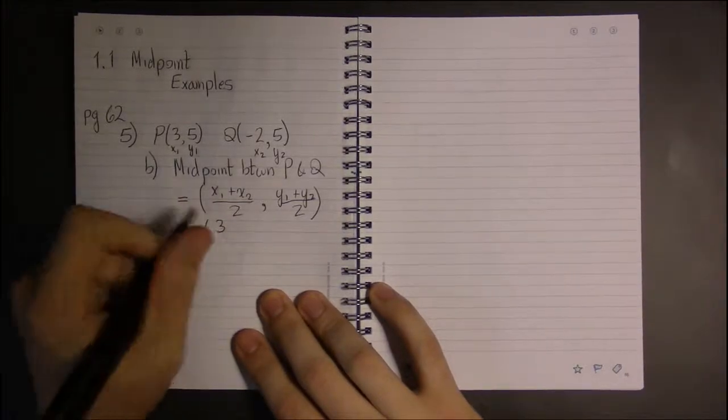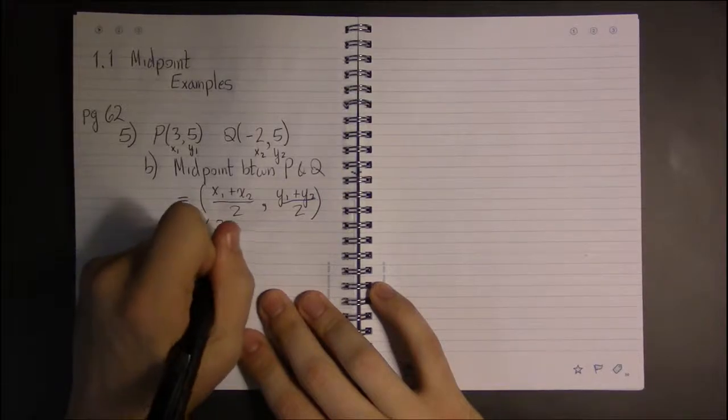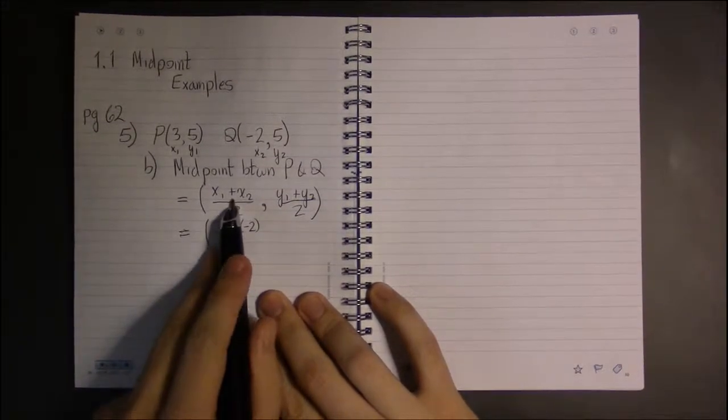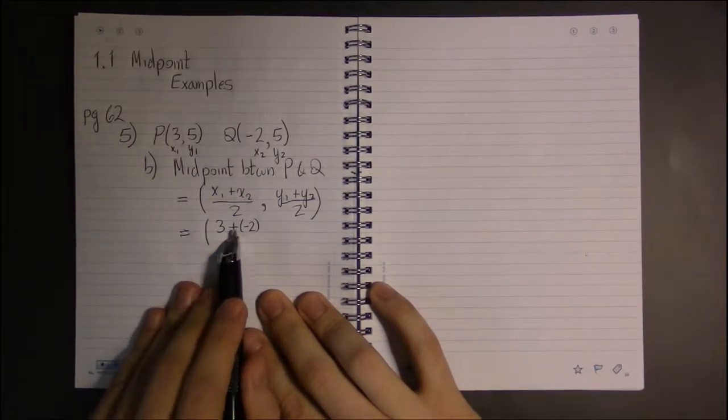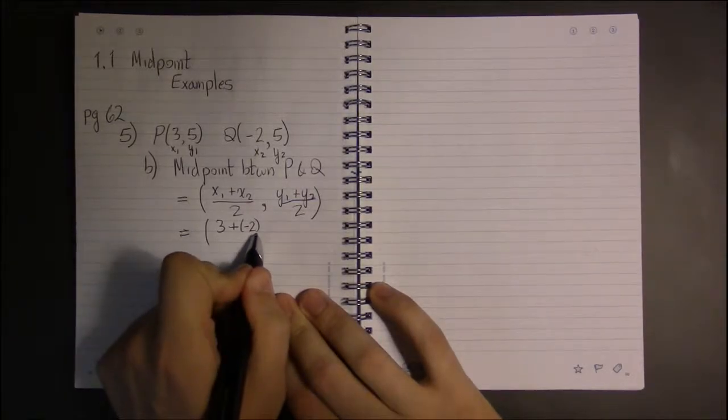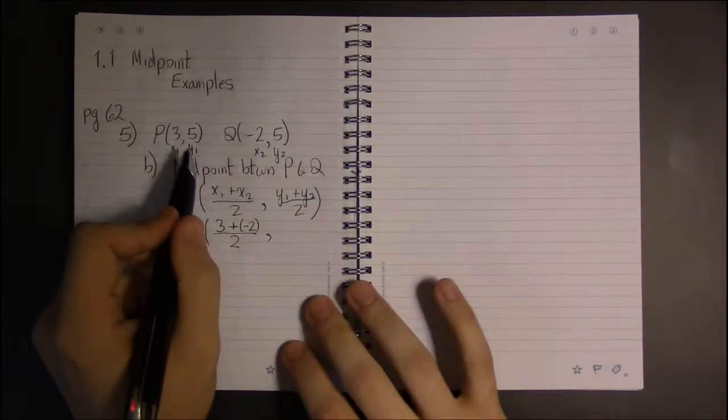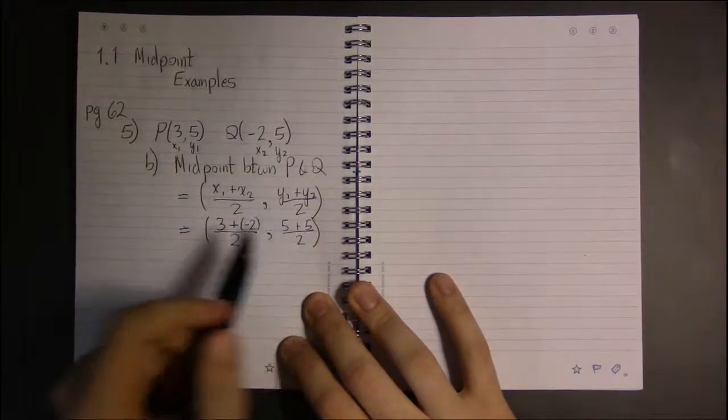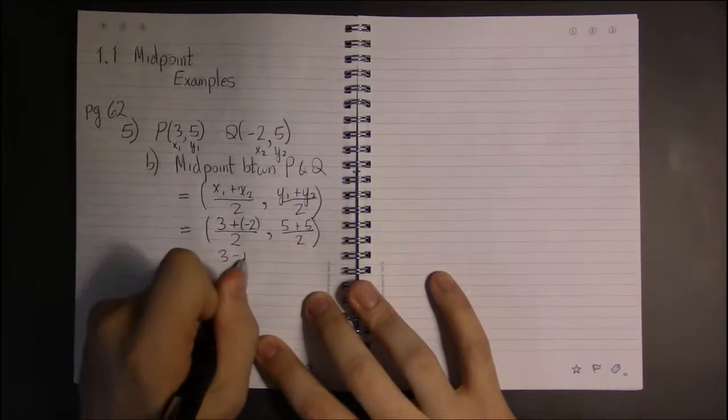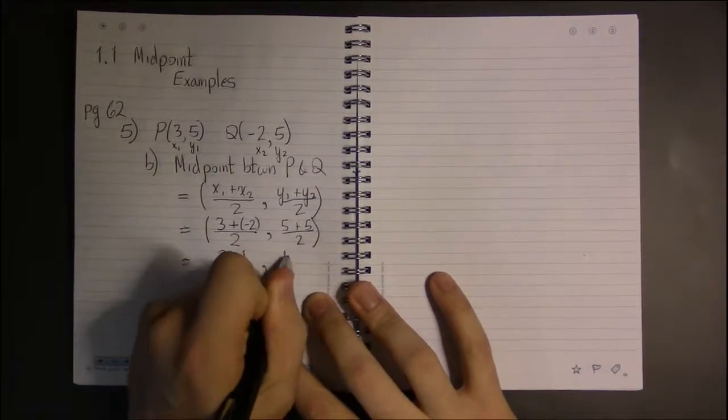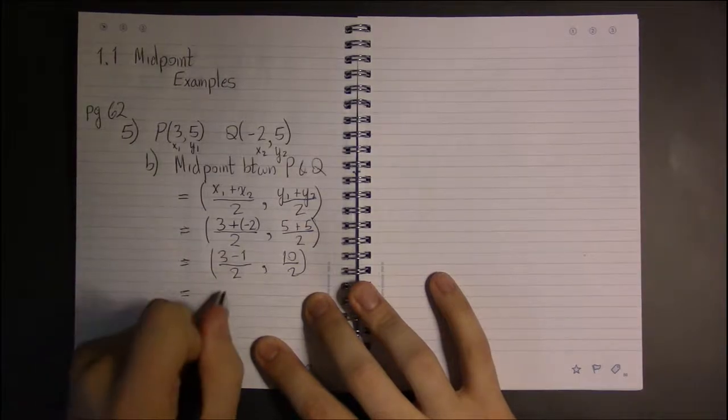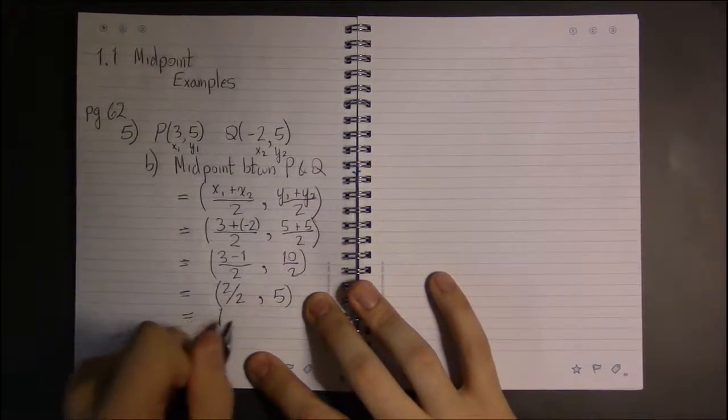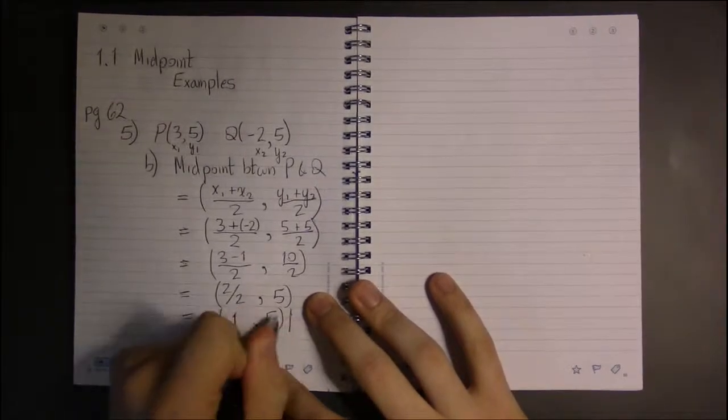So we have 3 plus minus 2. Now that plus doesn't make that negative go away. I have a plus here from the formula and a negative from the point. They both appear, and it'll end up being 3 minus 2. Y1 and y2: 5 plus 5, they're both 5, divide by 2. So this is 1 over 2, 10 over 2. And 10 over 2 is 5. So we have the point (1,5) as our midpoint.